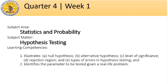At the end of this instruction, you are expected to illustrate what null hypothesis, alternative hypothesis, level of significance, rejection region, and types of error in hypothesis testing are. You are also expected to identify the parameter to be tested given in a real-life problem.